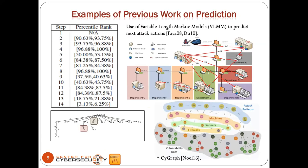One set of work from my research lab is the variable-length Markovian models we developed from 2005 to 2008. It uses Markovian properties to look at observables — specifically intrusion alerts, not packet captures. Based on what might be happening, we try to predict what might occur in the future. The table on the left shows performance dipping at steps nine and ten, but it recovers, showing some resilience in this method.